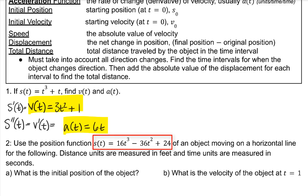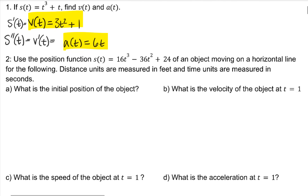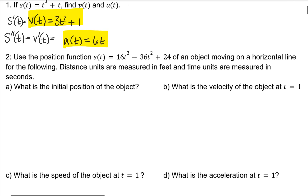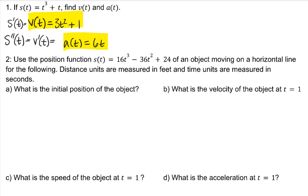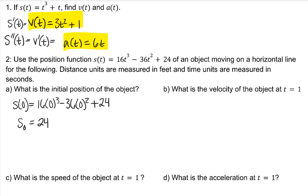Use the position function of an object moving on a horizontal line for the following. Distance units are measured in feet, and time units are measured in seconds. What is the initial position of the object? Initial position is your starting position when you plug in t equals 0 into the position function. Our initial position, s of 0 — also written as s sub-zero — is 24 feet.